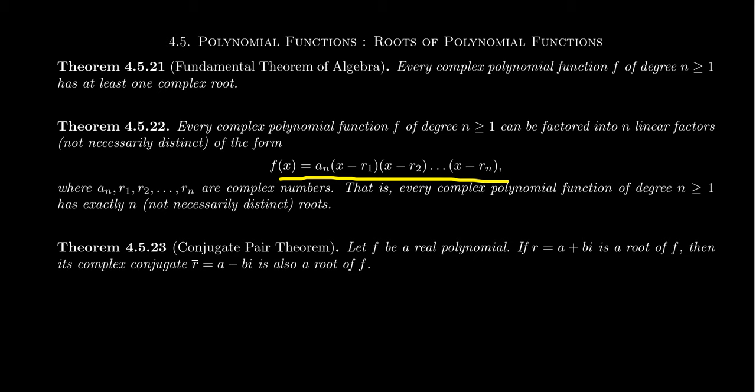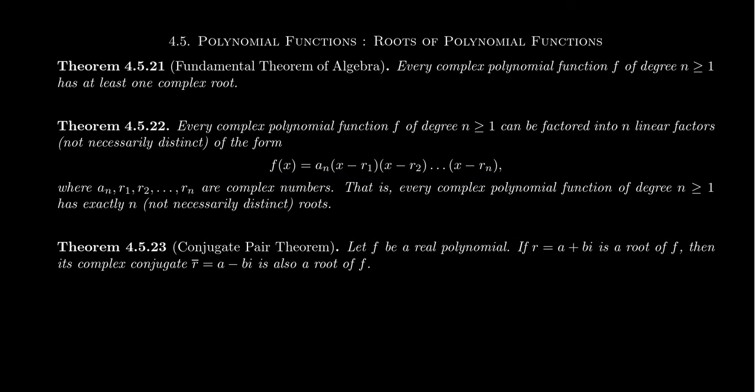You always have this linear factorization. Now some of the factors could be repeated. And the roots r1, r2, these could be complex numbers. Which be aware that real numbers are complex numbers. It's not an either or type of thing. It's not like a number is either real or imaginary. Real numbers are complex numbers, just like trees are plants, although not every plant is a tree. The complex numbers is a broader number system here. And so if you count the multiplicities of the roots, you will always have n roots when you're working over the complex number system.